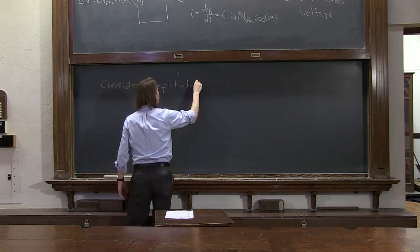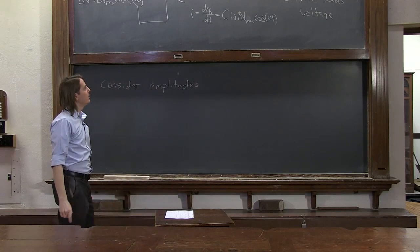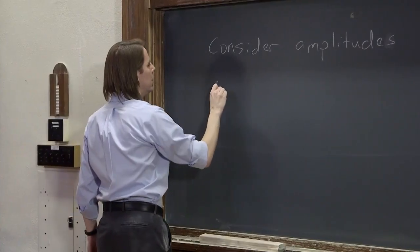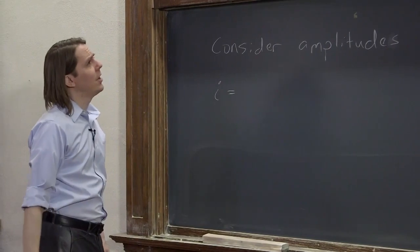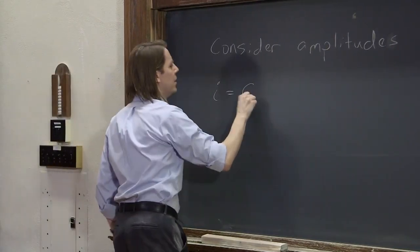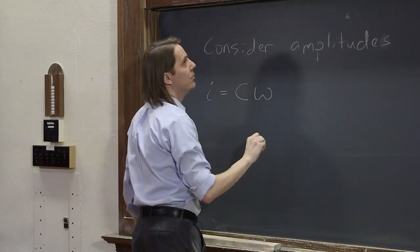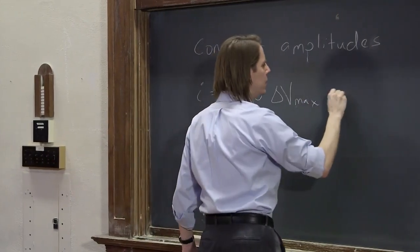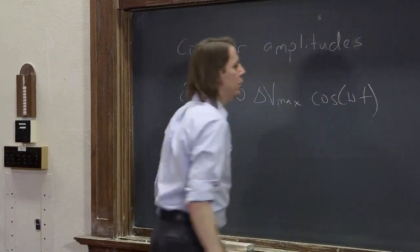So for the AC driven capacitor that we just dealt with, we found that it had a current as a function of time that basically looked like the capacitance times omega times delta V max times cosine omega T.